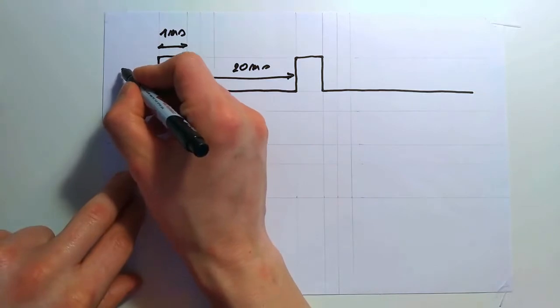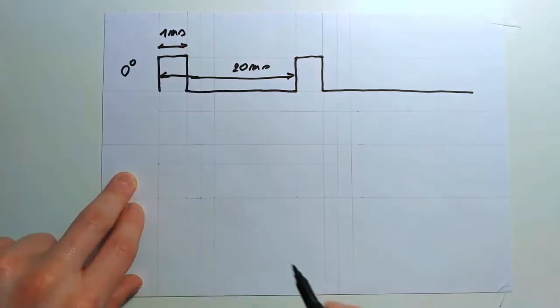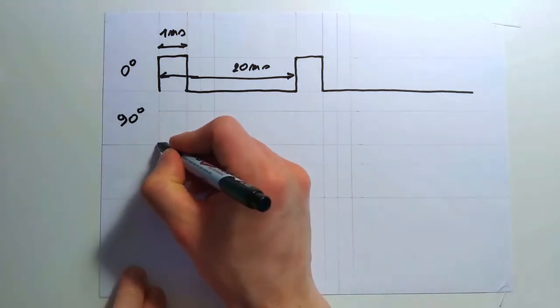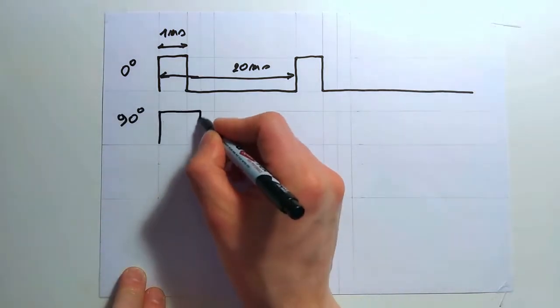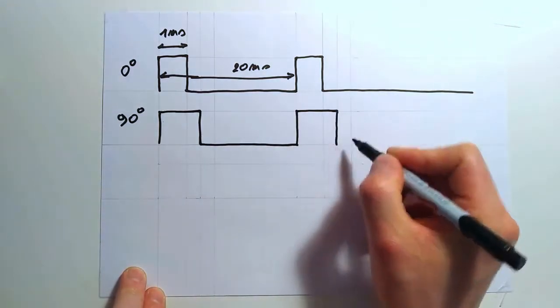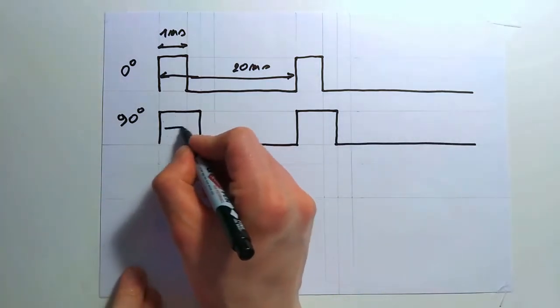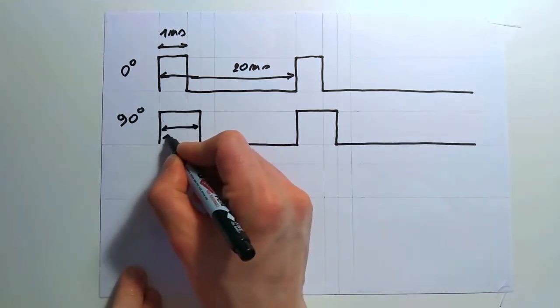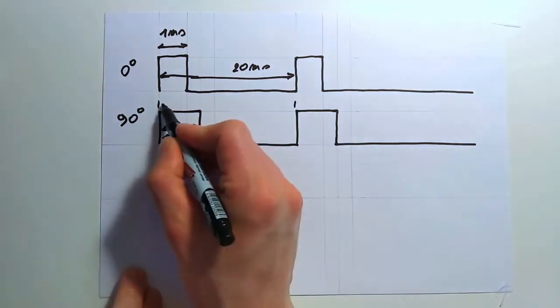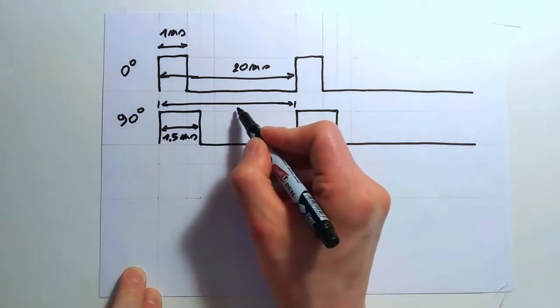Now, for 180 degrees, the pulse width will be extended even more. 2 milliseconds will move the servo to 180 degrees. To sum it up, we need repeating pulses with a 20 millisecond period.